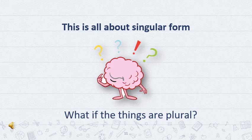This is all about the singular form. We have learned about 'this' and 'that'. 'This' is for the nearest and 'that' is for far — for an object or a person, we use it.